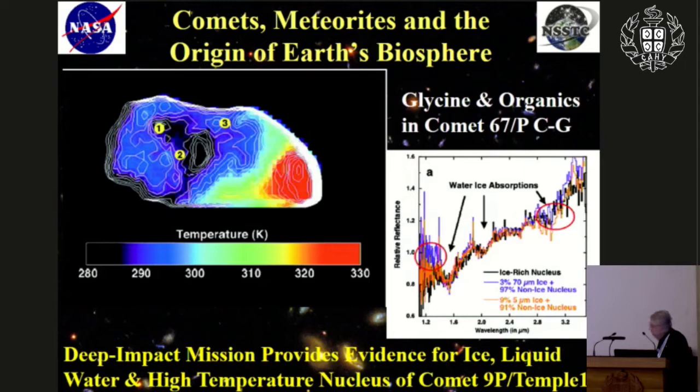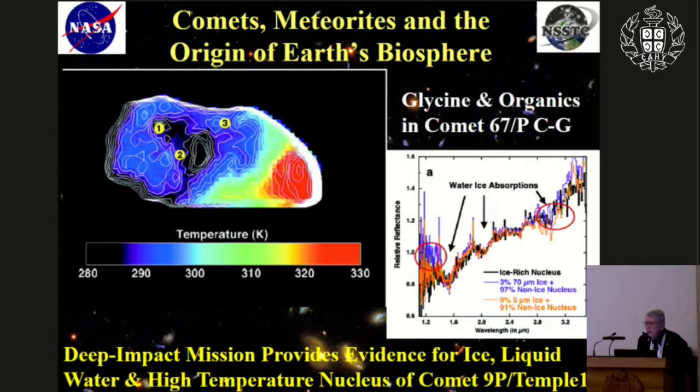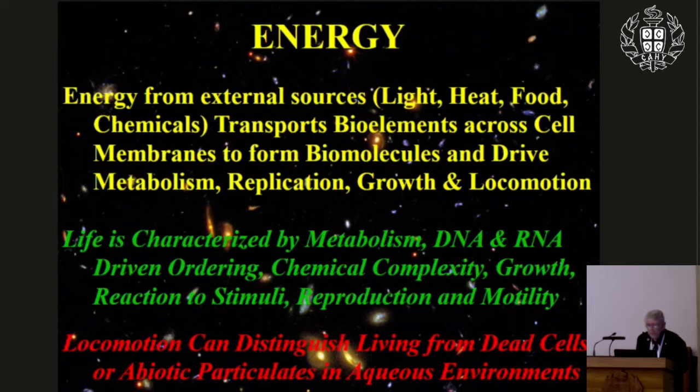Comets have a black surface consisting primarily of black rocky material and organic material similar to kerogen. Energy for life can come from light, heat, food, or chemicals, and is used to transport bioelements across cell membranes, drive metabolism, replication, growth, and locomotion. Life is characterized by metabolism, DNA and RNA-driven ordering, chemical complexity, growth, reaction to stimuli, reproduction, and motility. Interestingly, microscopists can distinguish living organisms from abiotic particles using just an optical microscope by observing locomotion.